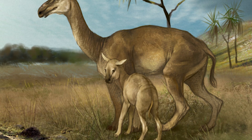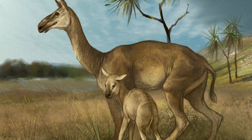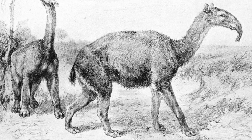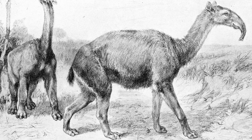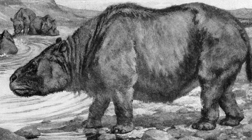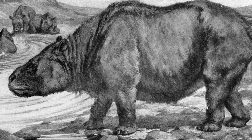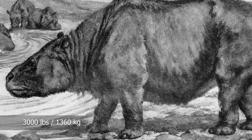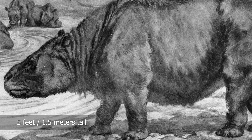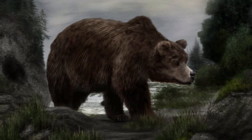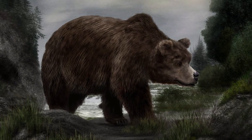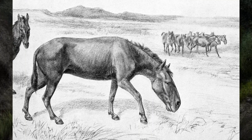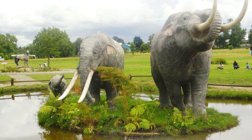Other animals found in South America during the Pleistocene included Macrauchenia, a camel-like animal with hooves like a rhino and an elongated trunk-like nose. Toxodon was another peculiar creature that had the body of a rhino, the head of a hippo, and the teeth of a rodent — it weighed 3,000 pounds and stood 5 feet tall at the shoulder. Short-faced bears that traveled from South to North America over the Panama land bridge also lived in South America, along with Hippidion horses and the elephant-like gomphotheres.